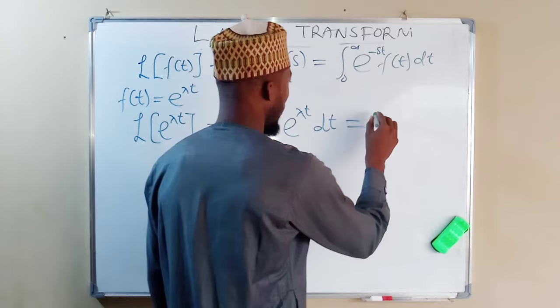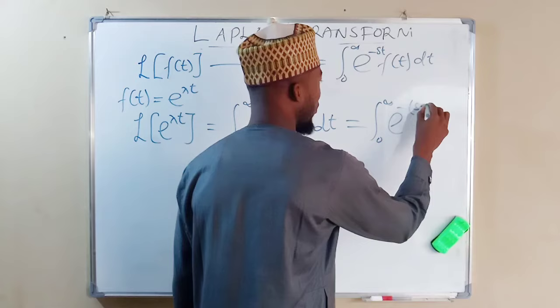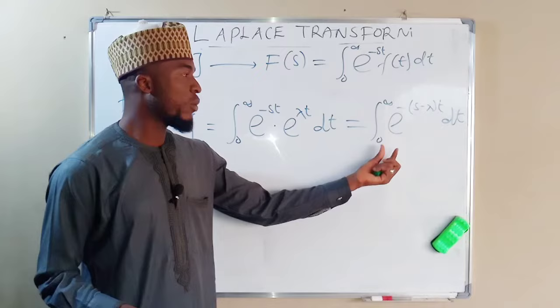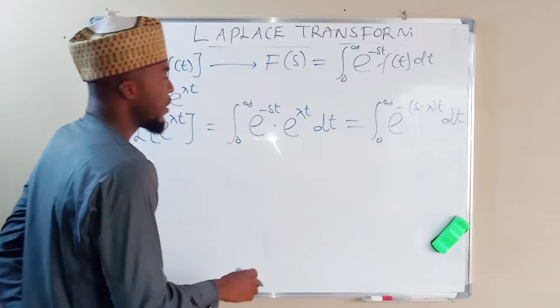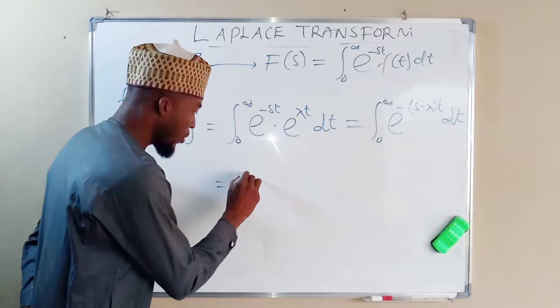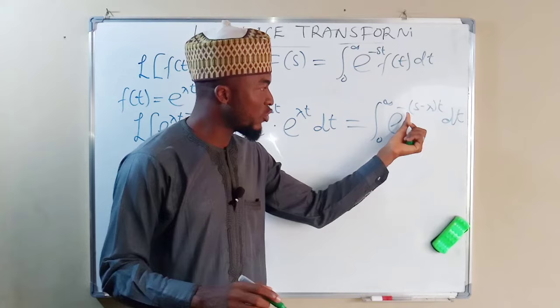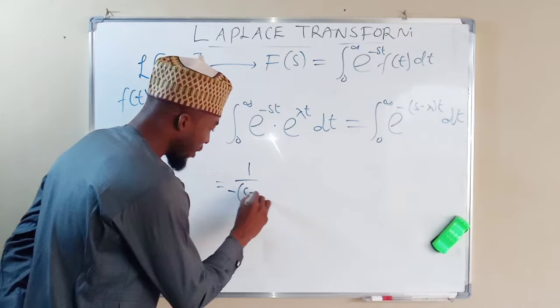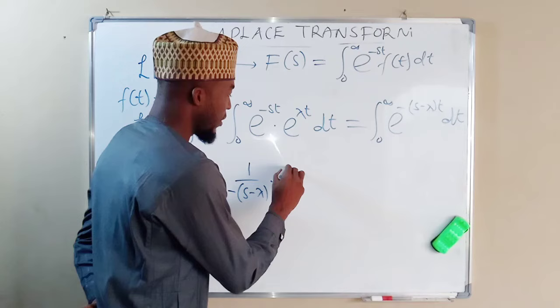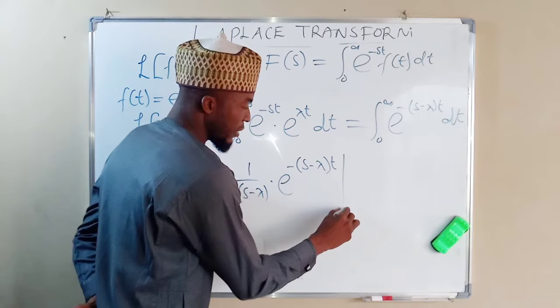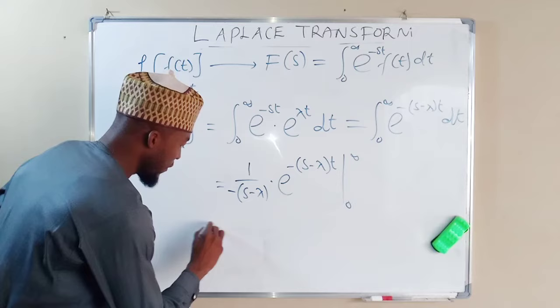Because we have a common base, we can add the indices together. This gives us the integral from zero to infinity of exponential negative (s minus λ)t, with respect to t. We are going to integrate this function and substitute our lower and upper bounds. Integrating gives us one divided by the derivative of the index with respect to t, which is negative (s minus λ), times exponential negative (s minus λ)t, evaluated from zero to infinity.